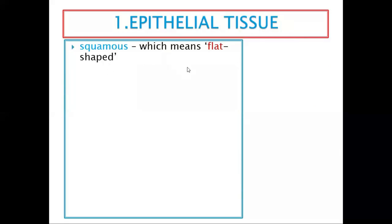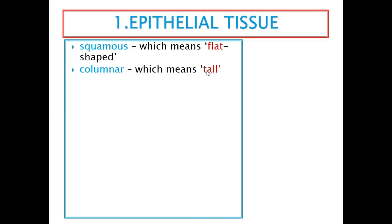The first example of epithelial tissue — remember, this tissue is very important in covering, lining, and secretion. The first type is squamous, which means flat; these cells are flat. Number two, we have columnar — they are like columns, tall. You need to know: squamous means flat, columnar means tall.